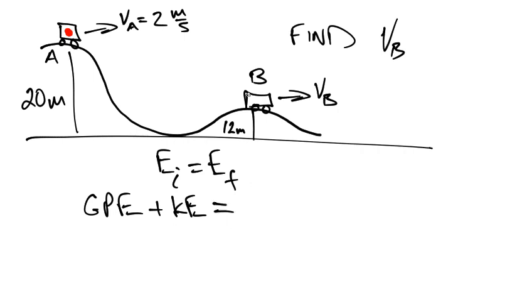Second of all, over here, what type of energy does it have? Now, by the way, this is, let's say, initial, and over here at the 12 meter height, it's got both. It also has gravitational potential energy, and it does have kinetic energy. But this is final and final.